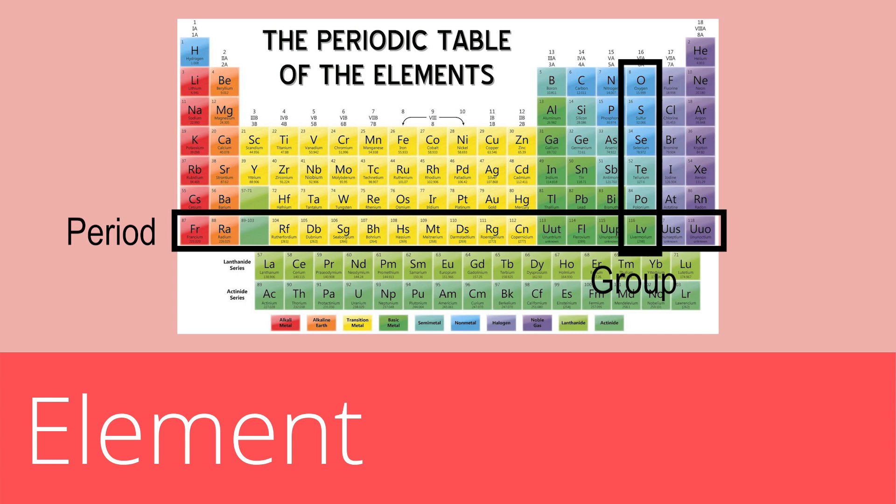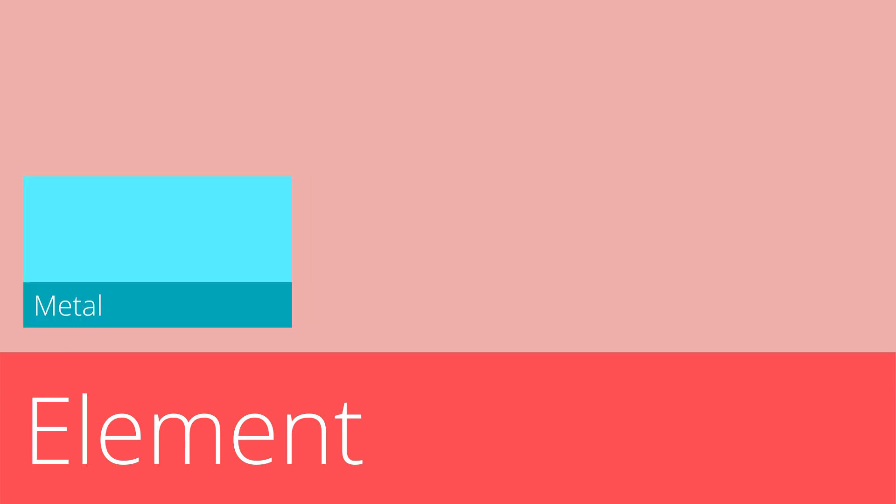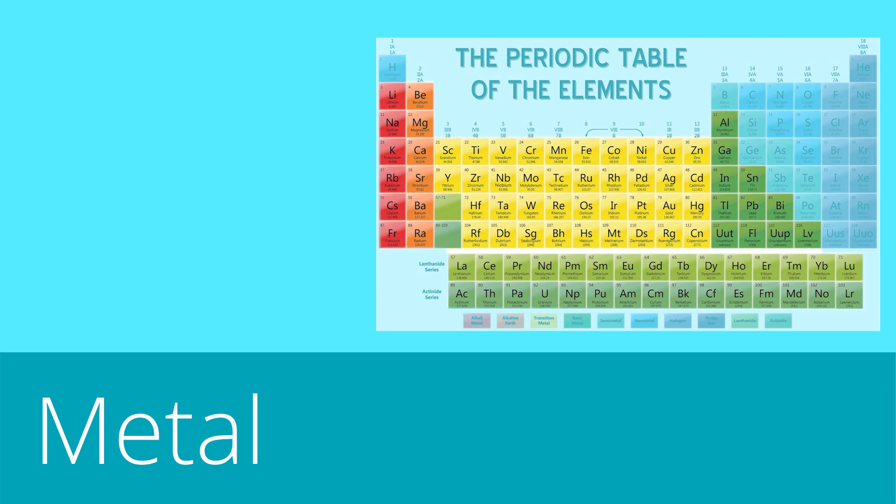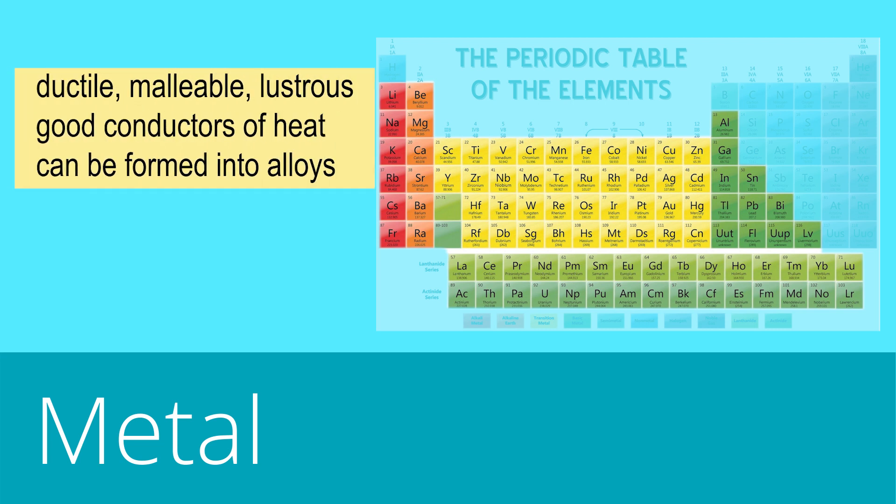Elements are also classified as metals, nonmetals, and metalloids. Metals are located at the left side of the periodic table. Iron, copper, gold, and zinc are examples. These elements are ductile, malleable, lustrous, good conductors of heat and can be formed into alloys.